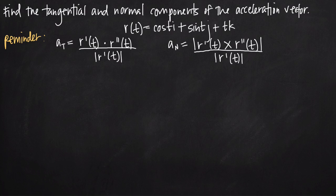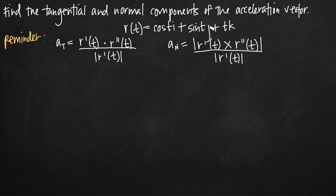Today we're going to be talking about how to find the tangential and normal components of an acceleration vector. In this particular problem, we've been given not an acceleration vector, but a position function r of t, where r of t is equal to cosine of t times i plus sine of t times j plus t times k. I've written the formulas we're going to need for the tangential and normal components of the acceleration vector.